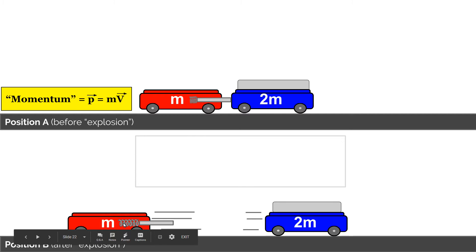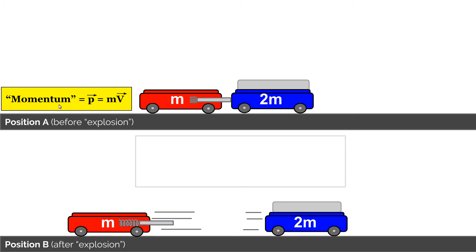This was true no matter what the ratio of the masses or velocities were. We defined this product of an object's mass times its velocity as momentum, represented by a lowercase p. In an explosion or a collision, there is something special about this product of an object's mass and its velocity.